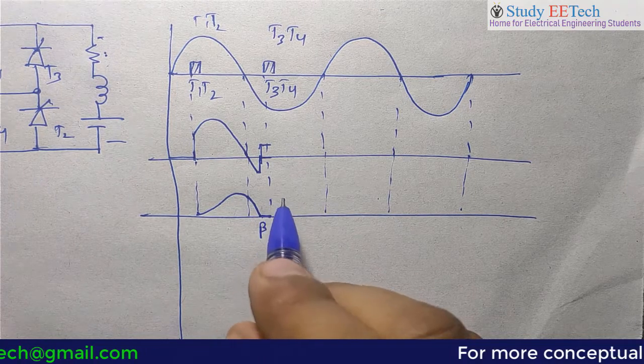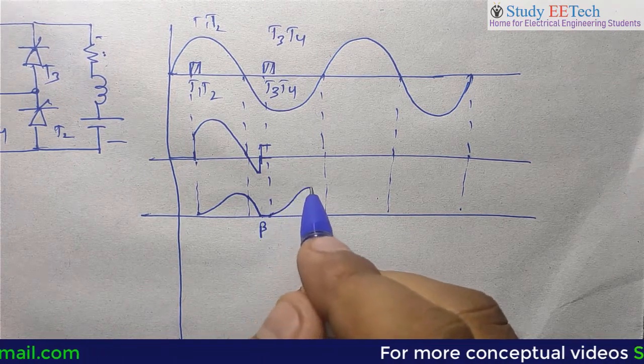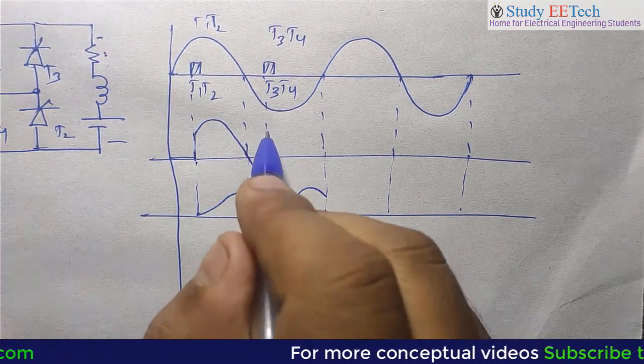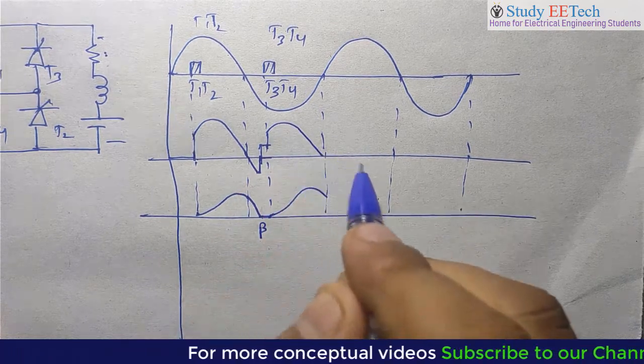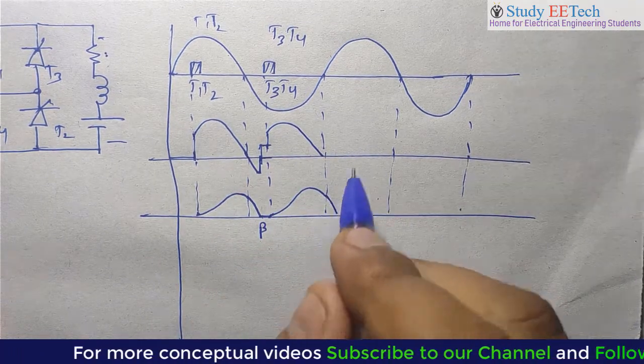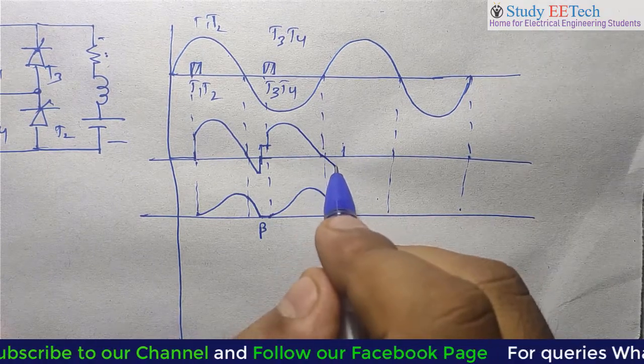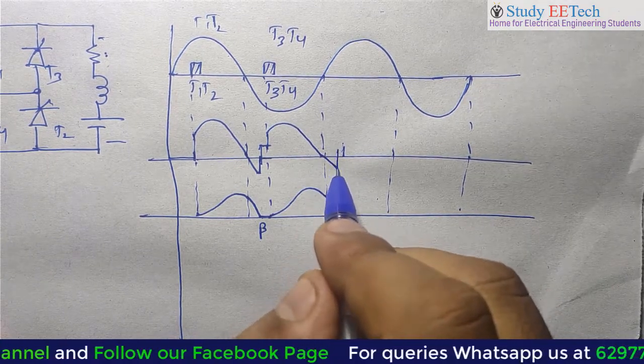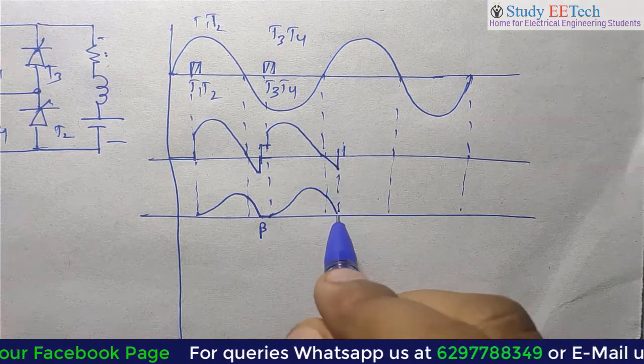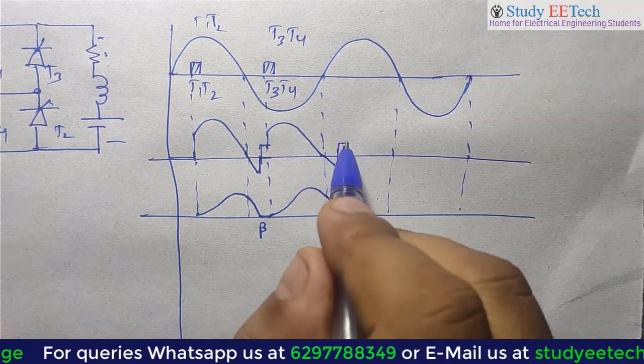Then the current is zero. Then again current will reach something like that and we will get the output voltage. Again it will come to zero before T1, T2 is triggered. And we will get negative swing till that point, pi plus beta. Then we will get E.